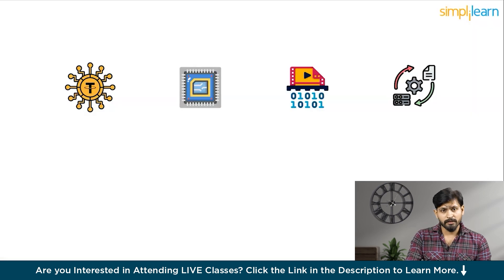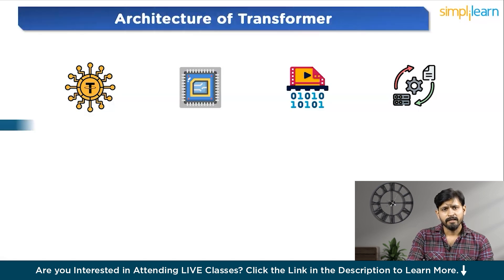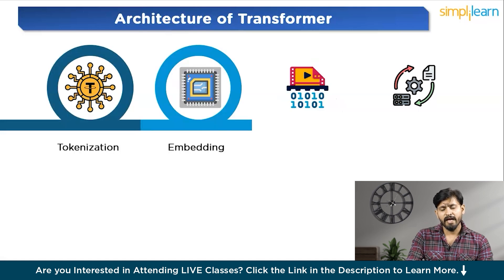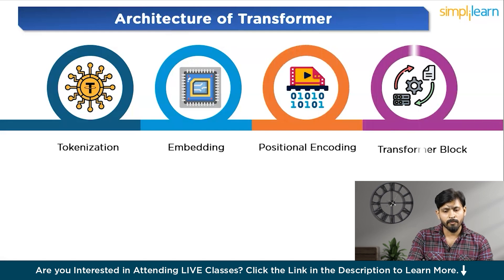Now that we know what transformers do, let's get started to their architecture. First time, the architecture may seem little bit complex, but fear not, let's break it down into its essential components. The first one that we have is tokenization. Next one we have is embedding. Third one we have is positional encoding. And finally, we have the transformer block. Now, let us understand each one of them one by one.